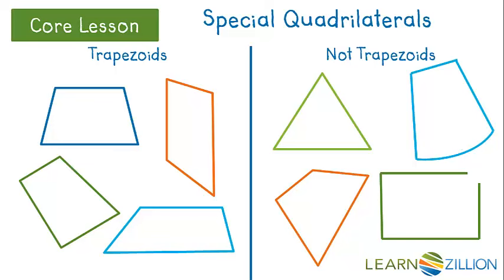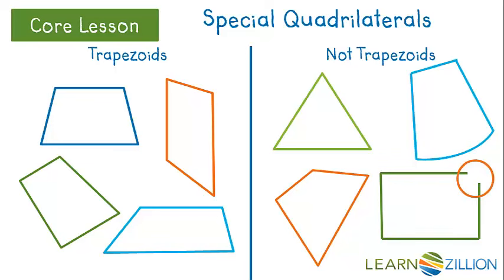Now I am going to look at this shape with an open corner. None of the trapezoids have open corners, so a trapezoid must be a closed shape, which is another attribute or rule for a polygon.